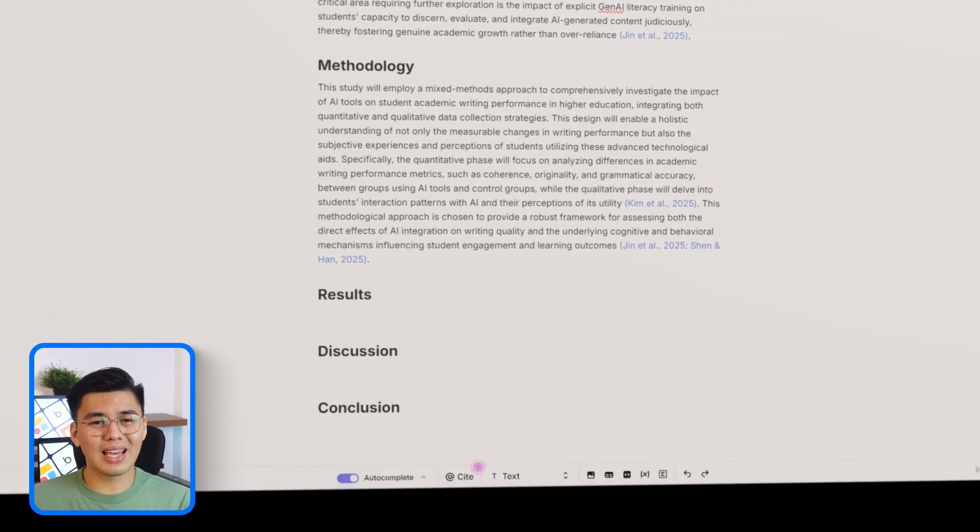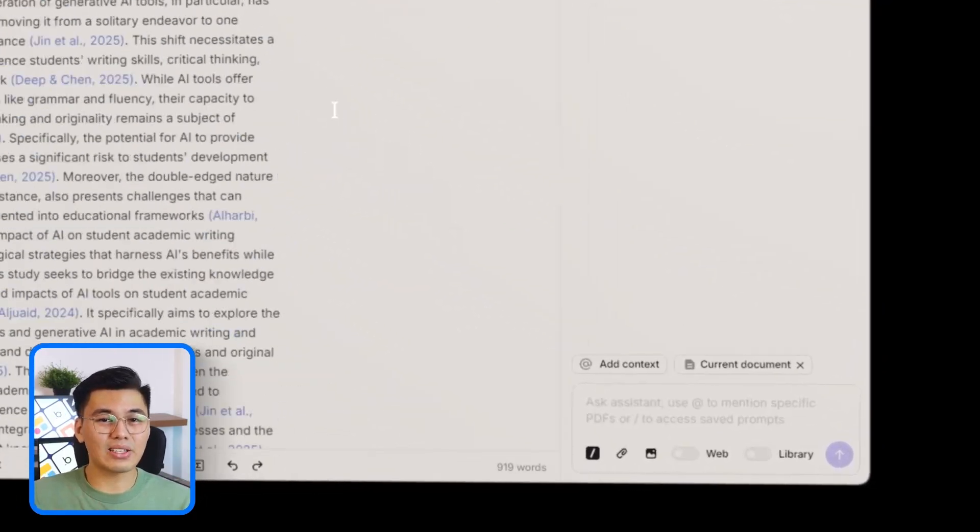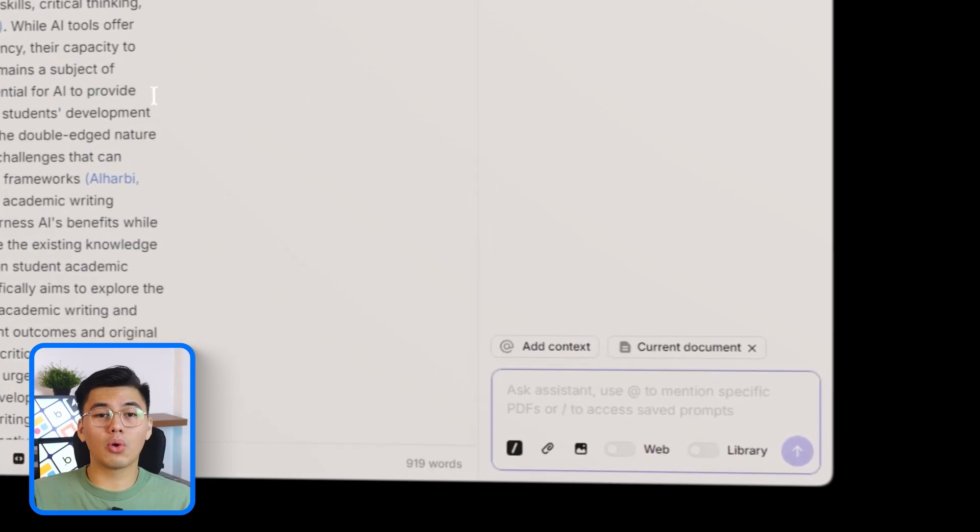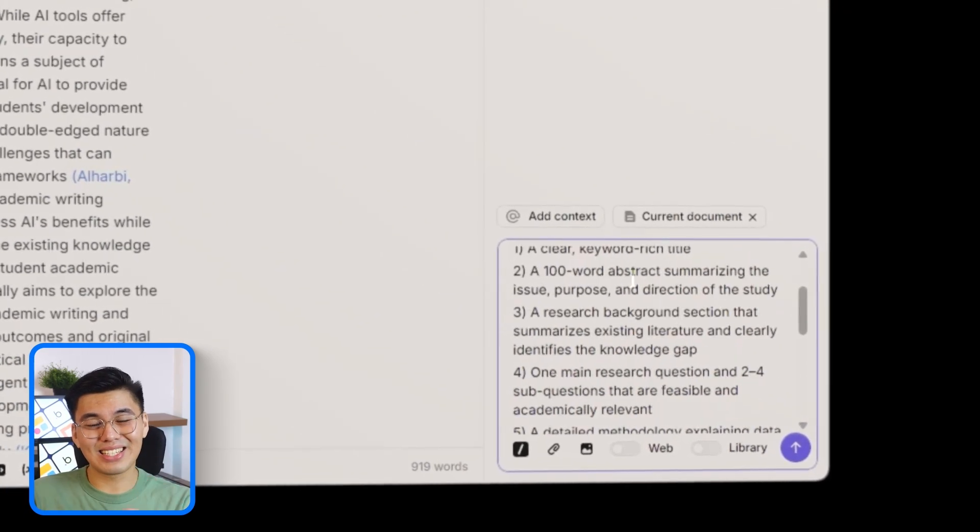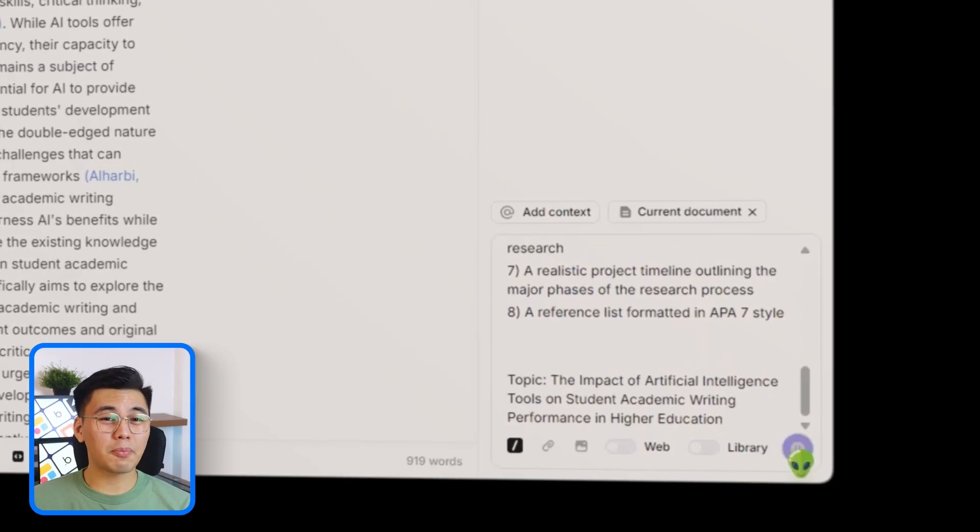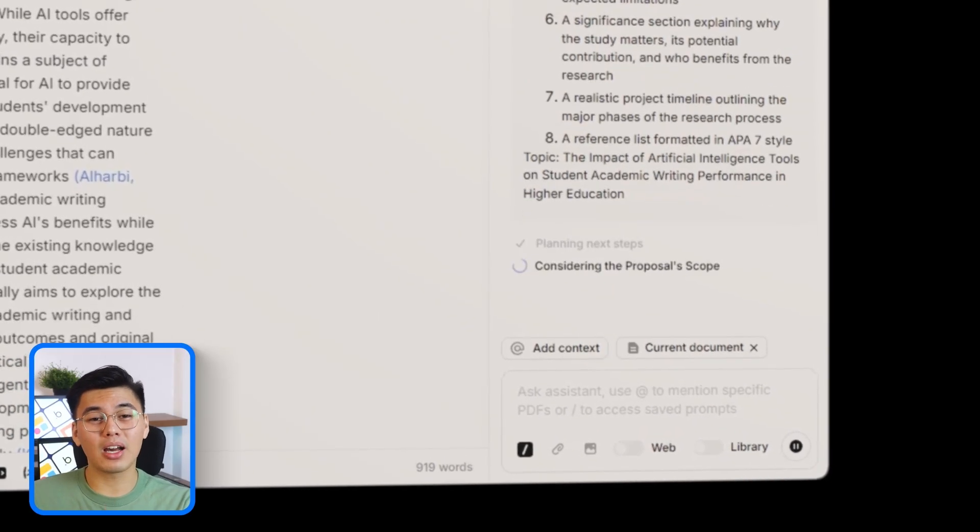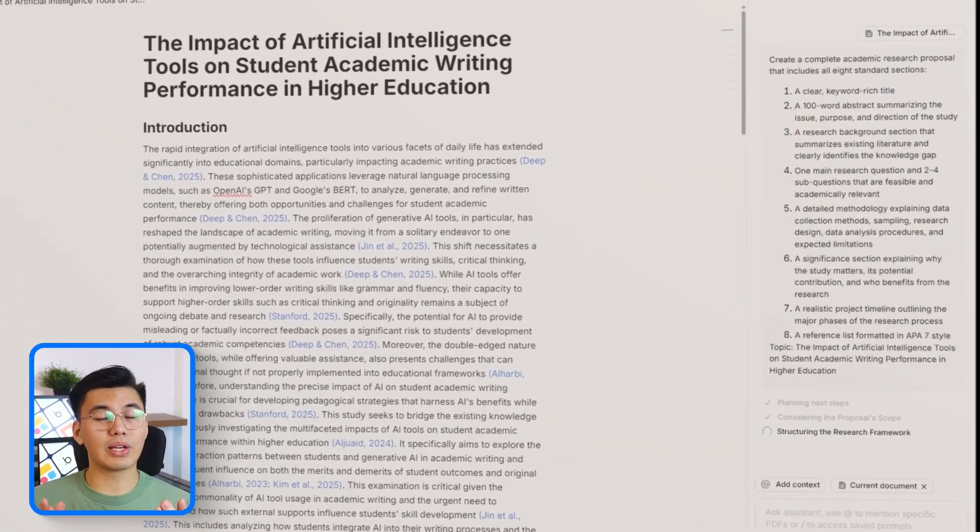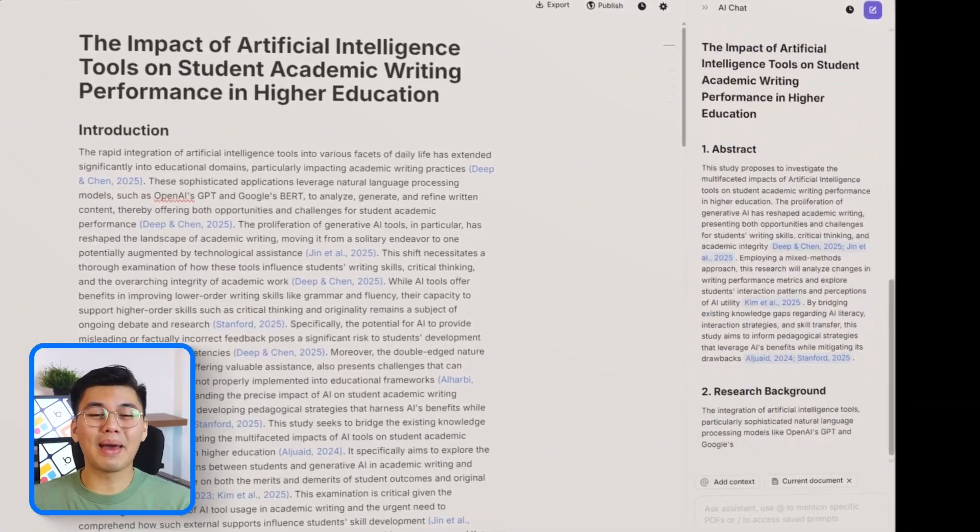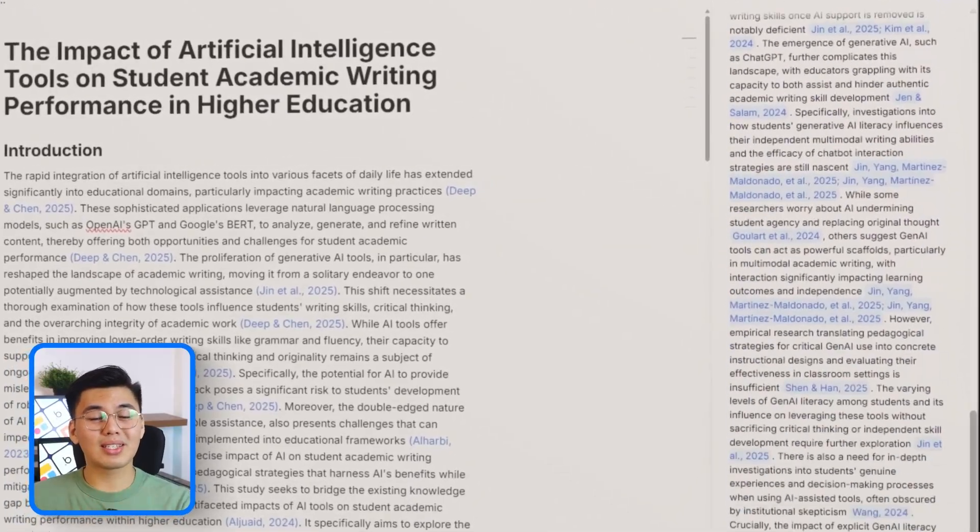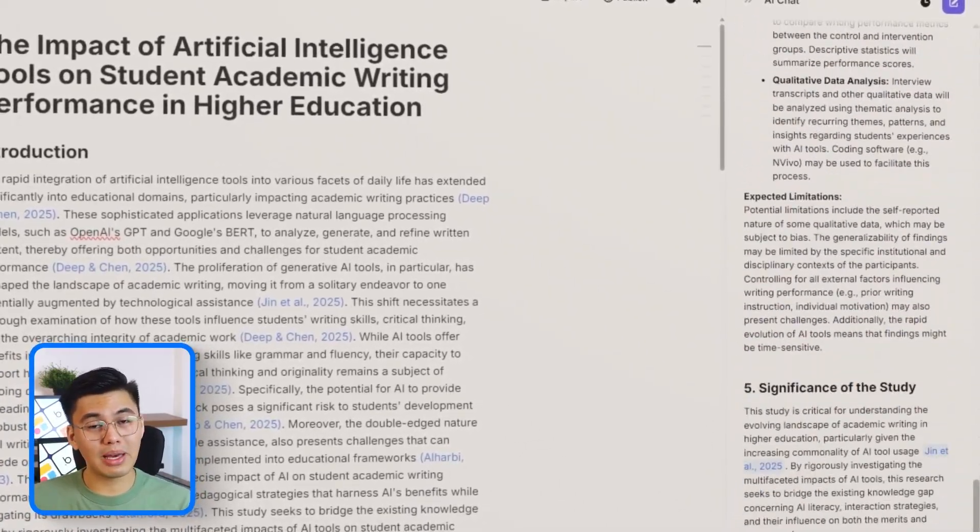Alright, now let's clear the test text and get ready for the main event. I'm going to paste the full master prompt - the one that contains all required sections of the research proposal - directly into Jenny's chat panel. Let's check if the entire prompt is visible because every part of it plays a role in generating a complete draft. When everything looks right, we'll click generate. This is where the magic happens.